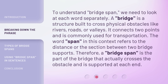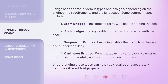To understand 'bridge span,' we need to look at each word separately. A bridge is a structure built to cross physical obstacles like rivers, roads, or valleys. It connects two points and is commonly used for transportation. The word 'span' in this context refers to the distance or the section between two bridge supports. Therefore, a bridge span is the part of the bridge that actually crosses the obstacle and is supported at each end.